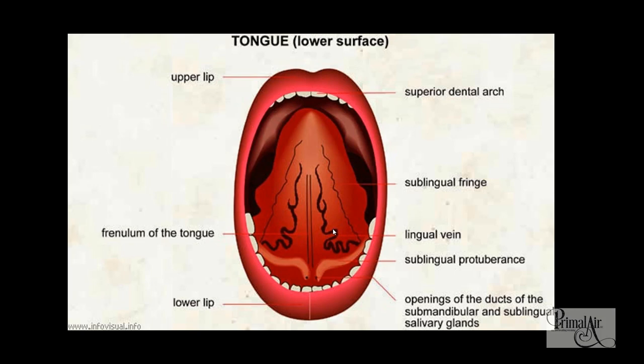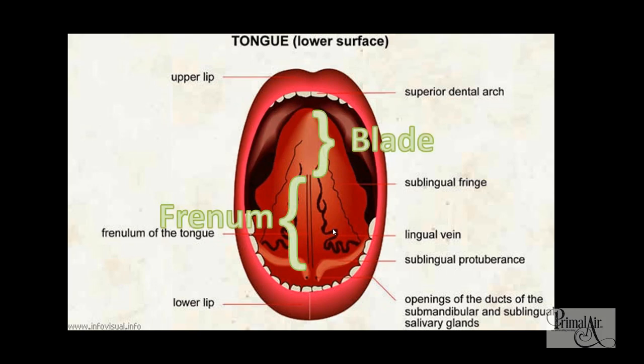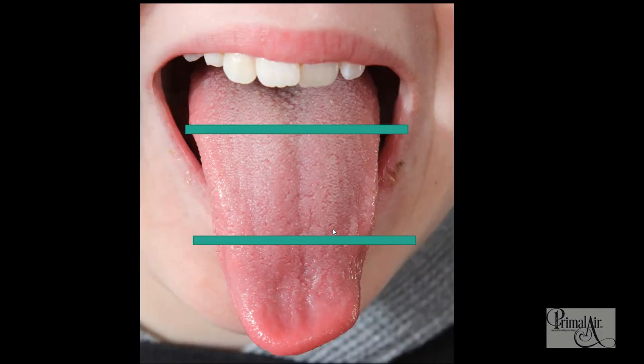This is the underside of the tongue with some anatomy to help you have a conversation with others. The blade of the tongue is from where the frenum attaches to the tip of the tongue — according to Kotlow, it should be over 16 millimeters. Then there's the frenum that attaches from under the tongue to the floor of the mouth. We divide the tongue into thirds: the anterior third which is the front, the middle third, and the posterior third which is the back third of the tongue.